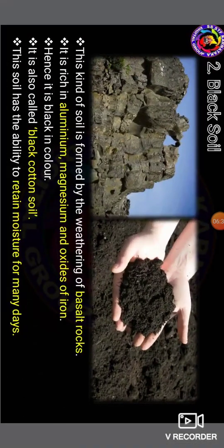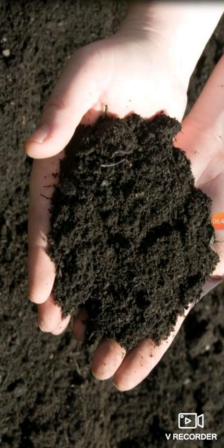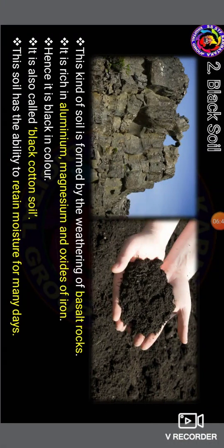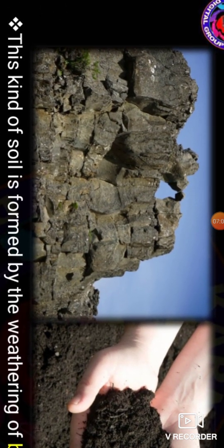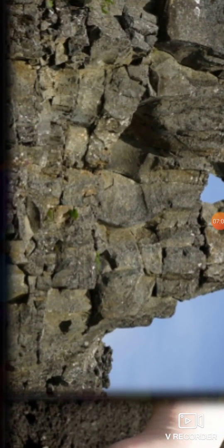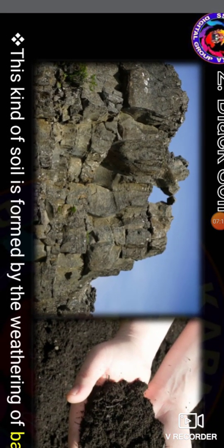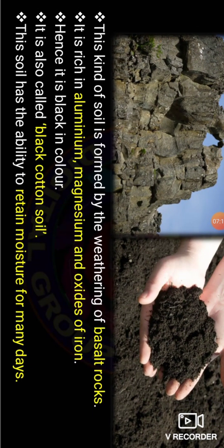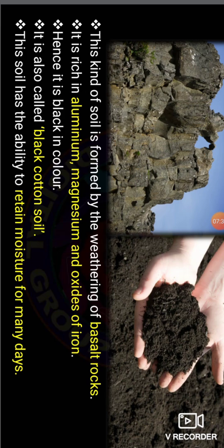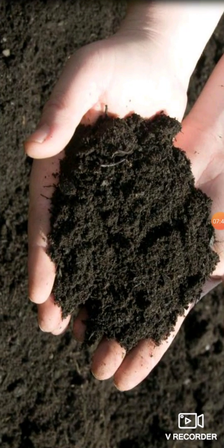Next is black soil. The color of this soil is black. This kind of soil is formed by the weathering of basalt rocks. It is rich in aluminium, magnesium, and iron oxides, which make it black in color. It is also called black cotton soil. This soil has the ability to retain moisture for many days. Since it is rich in soil nutrients, a variety of crops can be grown in it.